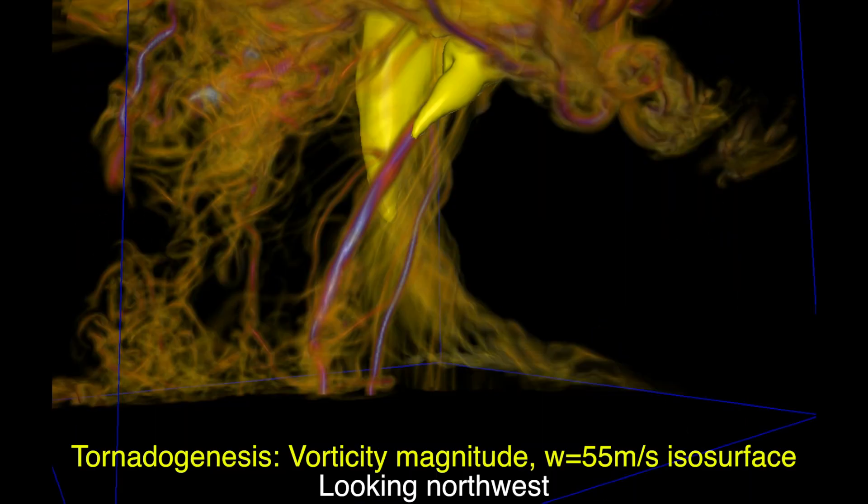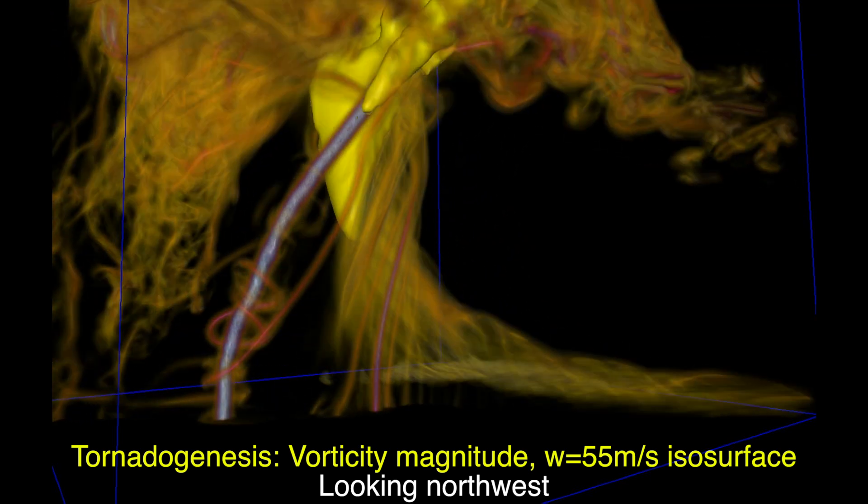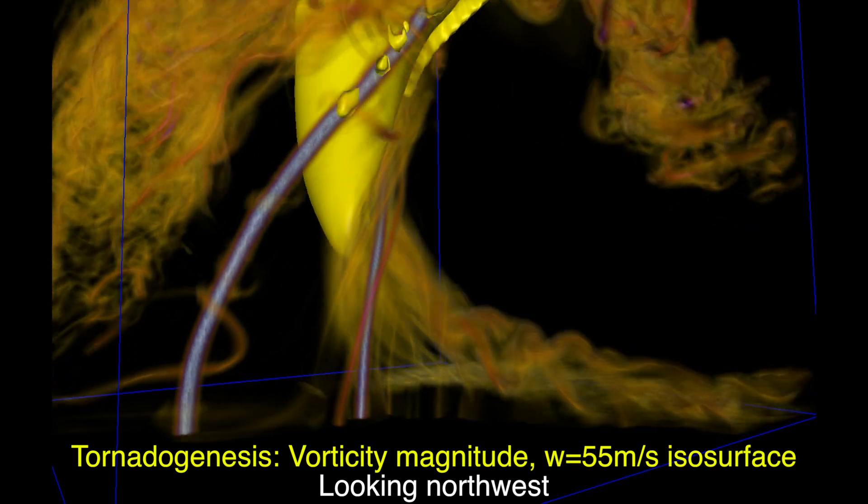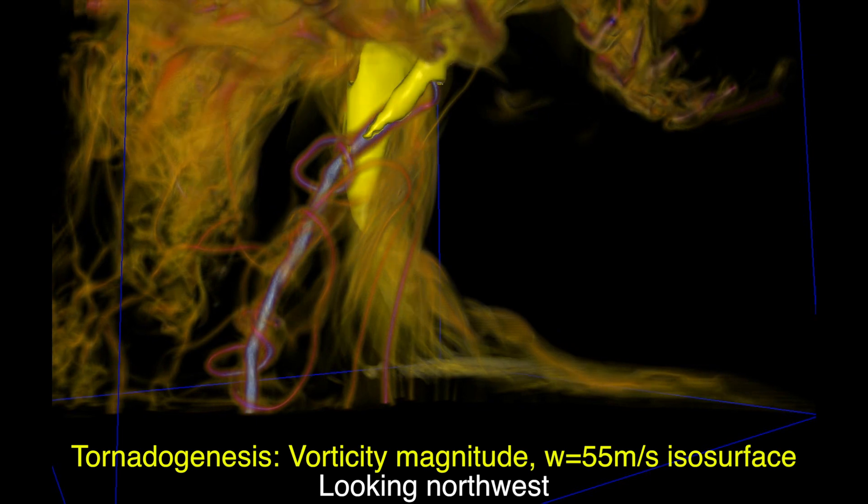Again, we explore the vorticity field focusing on larger values during tornado genesis. The storm's updraft is clearly tilting horizontally-oriented vorticity into the vertical, where it then contributes towards the updraft's rotation, which is primarily along a vertical axis.